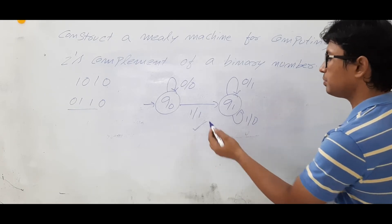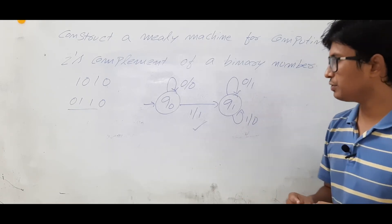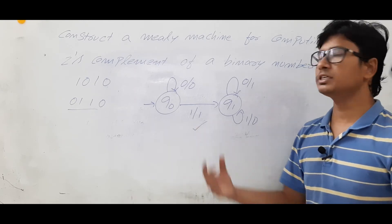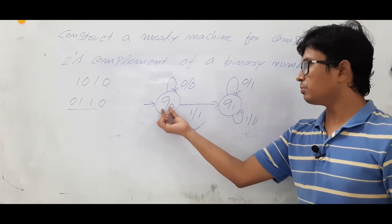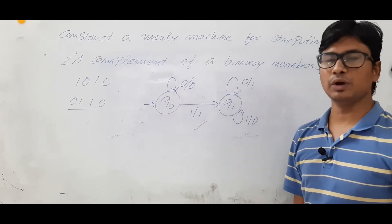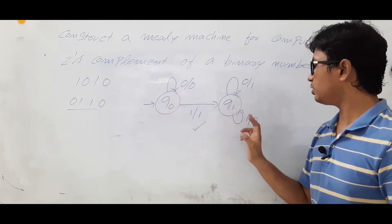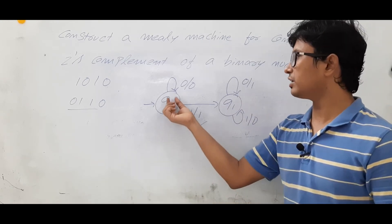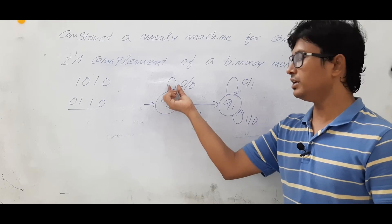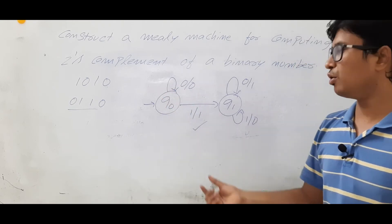This is the simple Mealy machine. Now you check whether it is a Mealy machine or not. First it should be a deterministic finite automata. Why? How so? From q0 on 0 and 1 you have moves. q1 on 0 and 1 you have moves. And when it will be a Mealy machine? From each state on each alphabet you should have an output.